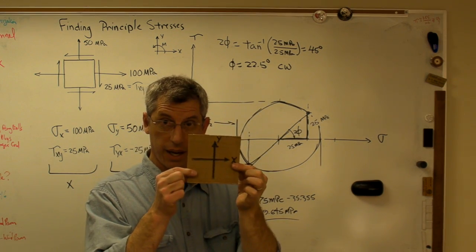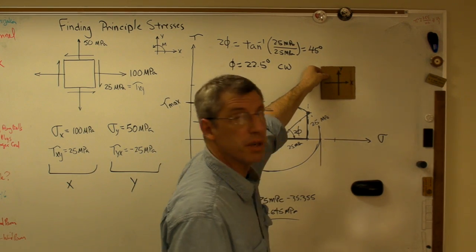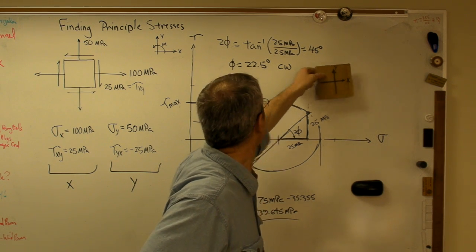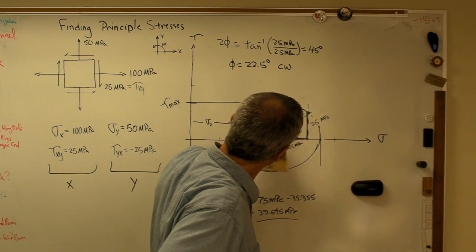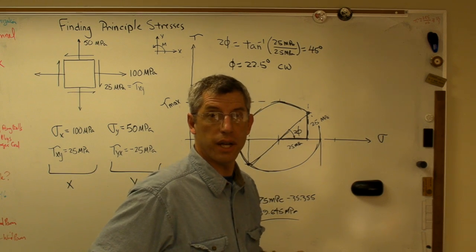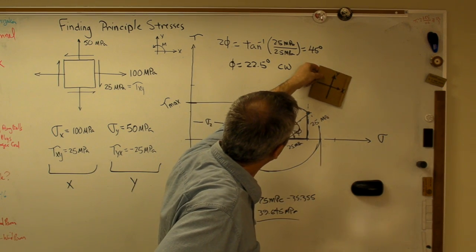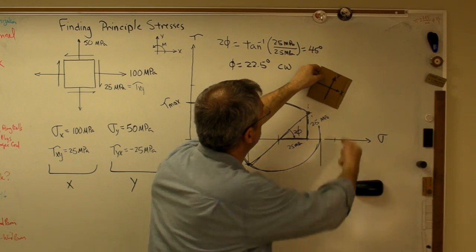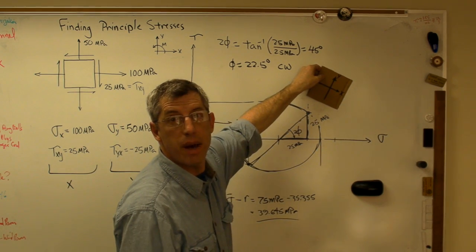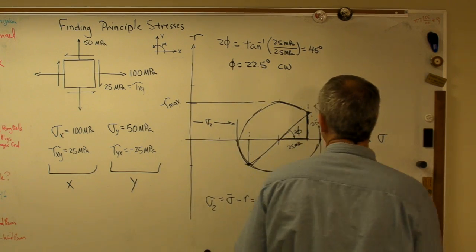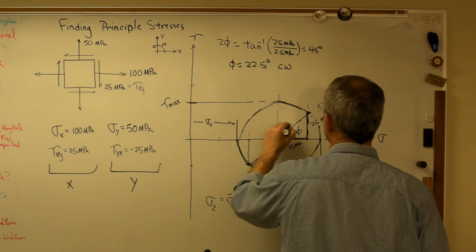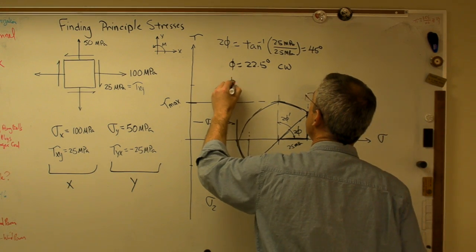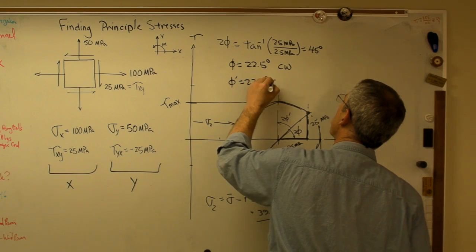What that means is I take my handy-dandy stress element here, stick it on the wall somewhere. Right there, I've got it lined up with some coordinate system I chose just for convenience. If I rotate that radius down to the horizontal axis, it's rotating counterclockwise. If I rotate this counterclockwise, 22.5 degrees, that means that the stress element is now lined up so that the x face, that face right there, sees the maximum normal stress. Now, if that's 45 degrees, 2 phi prime has to also equal 45 degrees. So phi prime is going to be 22.5 degrees counterclockwise.